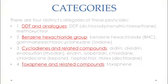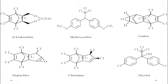The fourth category is toxaphene and related compounds, which includes toxaphene. These are the four different types of organochlorine pesticides classified on the basis of their structure.